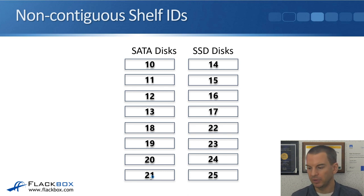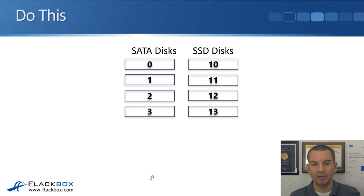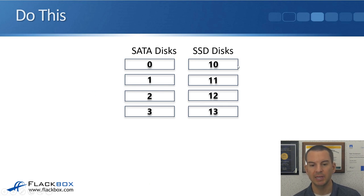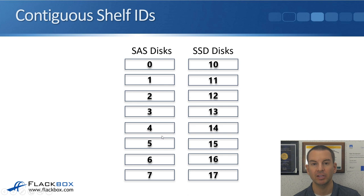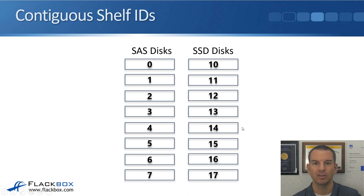You always want to use contiguous numbering. With the same four-shelf-per-stack example, start off with 0, 1, 2, 3 for the first stack, then 10, 11, 12, 13 on the second stack. That way, when you add additional shelves, the numbering stays contiguous — you'd have 0, 1, 2, 3, 4, 5, 6, 7 on the SATA side and 10, 11, 12, 13, 14, 15, 16, 17 on the SSDs. Everything remains logical and contiguous.